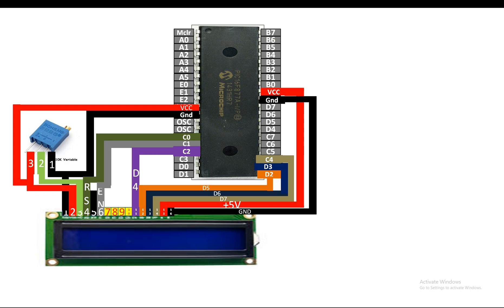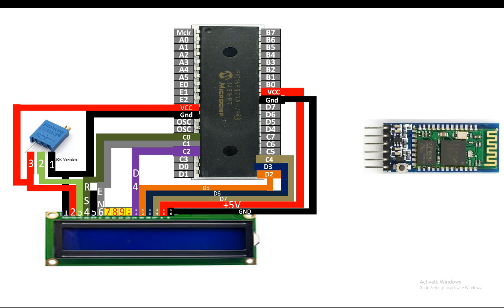This is our HC05 Bluetooth module. Holding it with the button at the bottom, the pins from bottom to top are: enable (also called key), VCC, ground, TX, RX, and state. The enable pin is used to change the mode of the HC05 — either command mode or data mode.